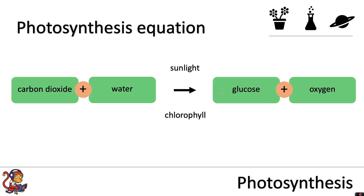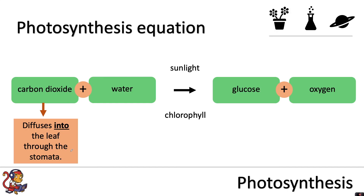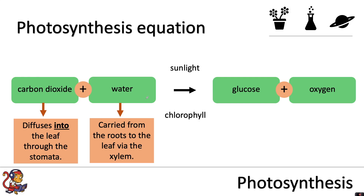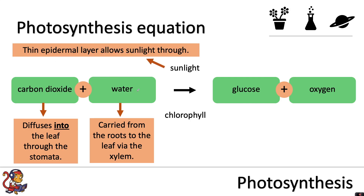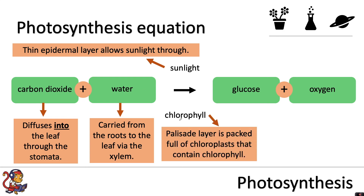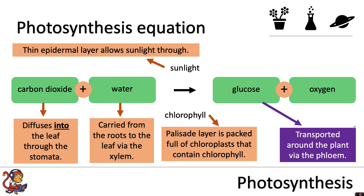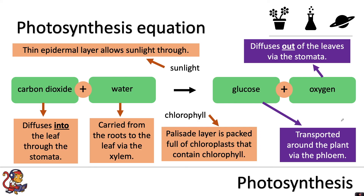Putting it together with the photosynthesis equation: the carbon dioxide that the plant needs diffuses into the leaf through the stomata; the water needed is carried from the roots to the leaves via the xylem; the sunlight is allowed through by the thin epidermal layer; and the chlorophyll is found in the palisade layer, which is packed full of chloroplasts. In this process, glucose and oxygen are produced — glucose is transported around the plant via the phloem, and oxygen diffuses out of the leaves via the stomata.